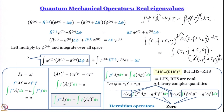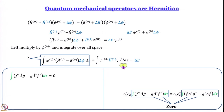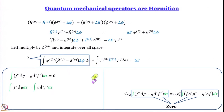Let us clean things up. This condition — that this integral equals zero — is actually the definition of Hermitian operators. An operator that satisfies this condition is called a Hermitian operator, and Hermitian operators have real eigenvalues. Having real eigenvalues is a corollary; the definition is the integral condition. We have essentially back-calculated from the requirement of real eigenvalues to show the operator must be Hermitian.